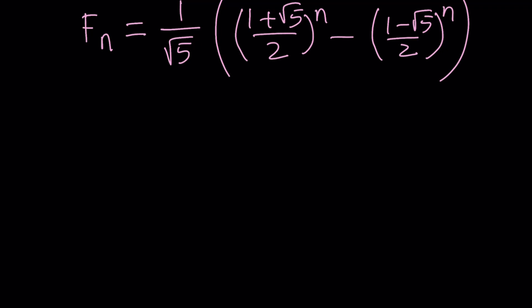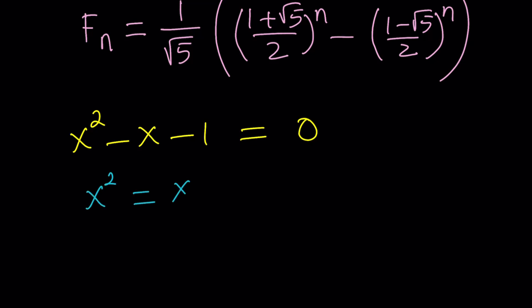The golden equation is x squared minus x minus 1 equals 0. That's going to be the root of the solution. So let's take a look at this equation. Pay special attention to how we build the higher powers from here. Starting from the golden equation, I'll isolate x squared and work with this polynomial in a linear way.